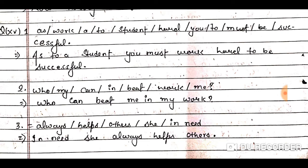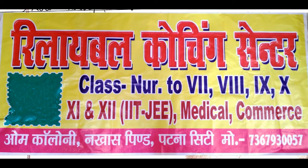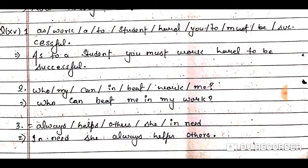Question number two: my / can / in / beat / work / me. It is an interrogative sentence beginning with the question word 'who'. After 'who', the modal auxiliary 'can' is placed, then the main verb V1 'beat', then the object 'me', then the complement 'in my work'. The correct answer is: Who can beat me in my work?